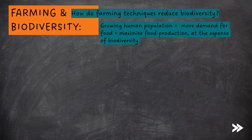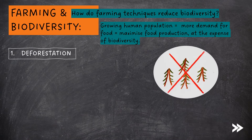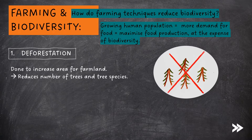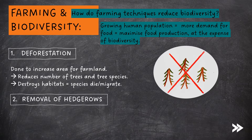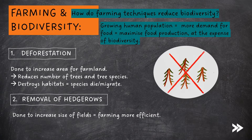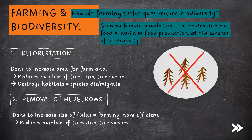Humans reduce biodiversity in different ways, such as deforestation. This is done to increase the area for farmland; however, deforestation reduces the number of trees and tree species, it destroys habitats, meaning that species die or migrate. The removal of hedgerows is done to increase the size of fields in order to make farming more efficient; however, this reduces the number of trees and tree species, destroys habitats, and species die or migrate.